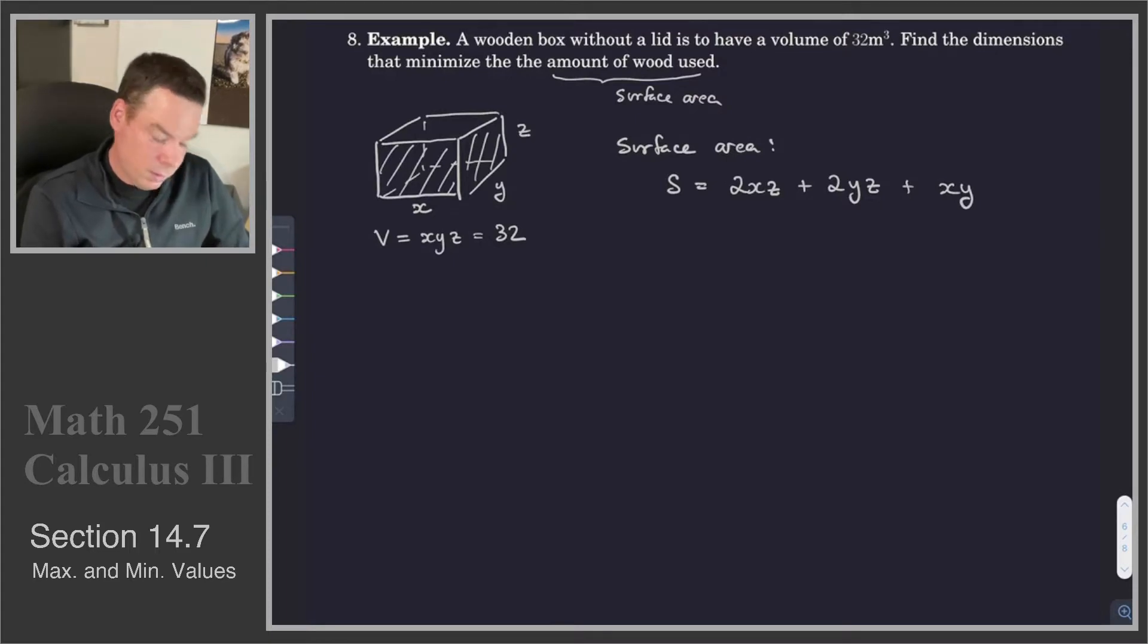Now this is a function of three variables. We want to find the minimum value this function can take on, but we know that one of these variables can be expressed in terms of the other one, because this volume equation tells us that z can be written as 32 over xy.